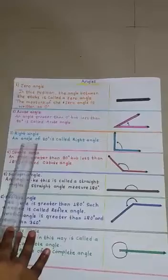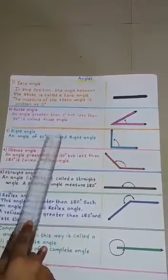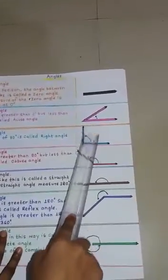3. Right angle. An angle of 90 degrees is called a right angle. This is a right angle.